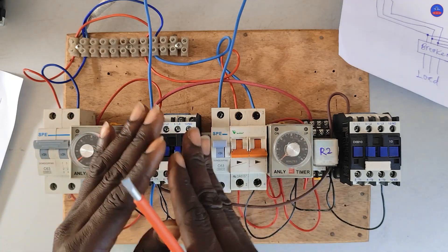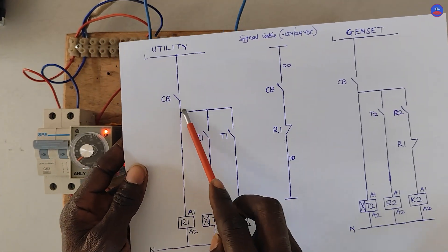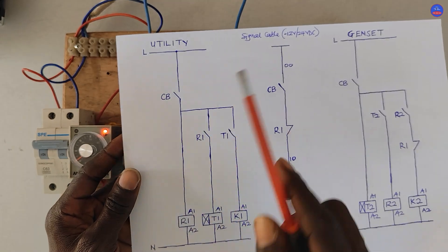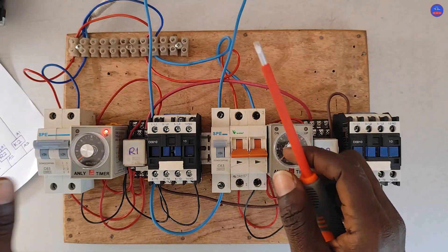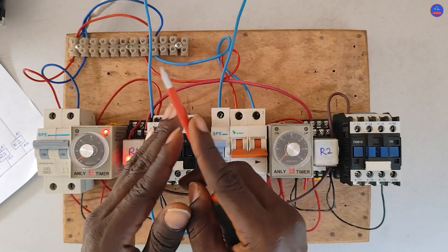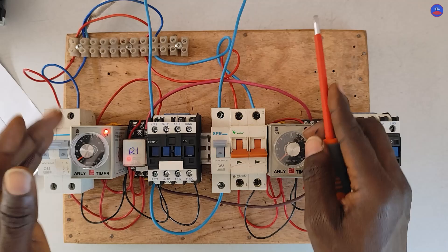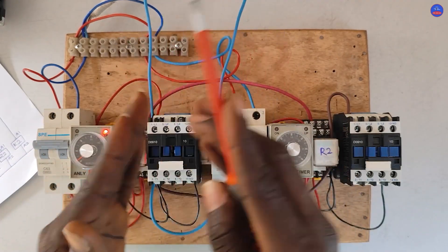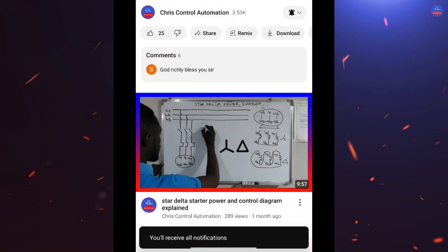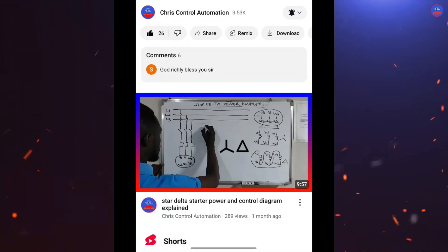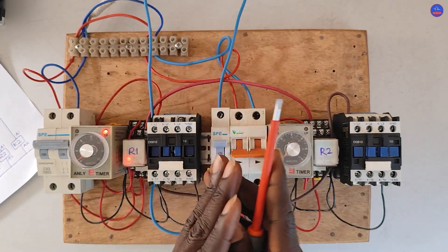So engineers, this is how automatic transfer switch or automatic changeover switch is wired. You can also install a phase failure relay on the utility side to monitor when the phases are down. In the next video, I am going to show you how to wire a phase failure relay. I thank you all so much for having the time to watch this video. If you enjoyed the video and this is the first time you are seeing this channel, I urge you to subscribe, hit the subscribe button, hit the bell icon, choose all to turn on your notification, like the video, put down your comments, and share the video with your friends. We will meet in the next video — thank you.